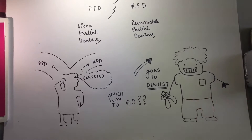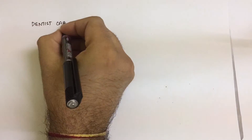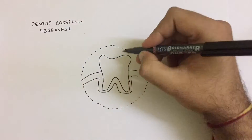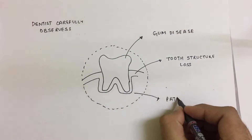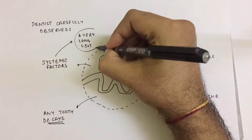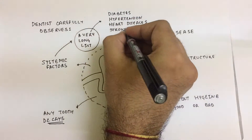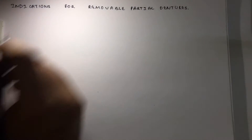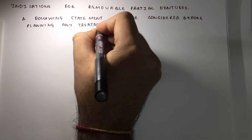A good dentist would always carefully assess the situation and the condition of the remaining natural teeth, along with the other systemic and emotional factors experienced by the patient. We will today study various situations and factors which will help us in deciding one option over the other. The following statement should be considered before planning any treatment for a patient.